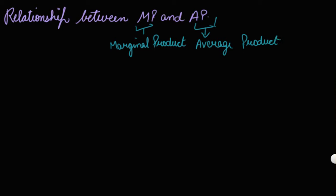Let's make the table again. Your fixed factor of production — let's say land — is 1, 1, 1.